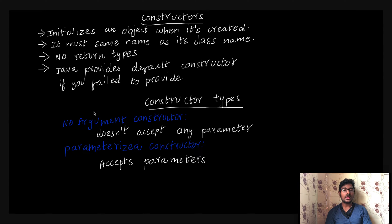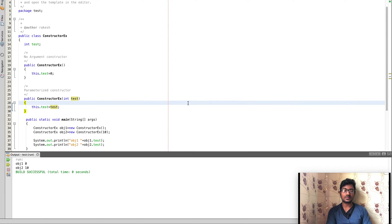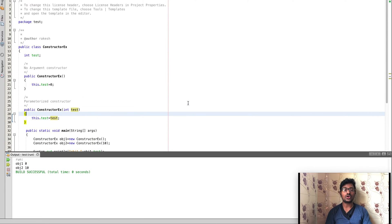Constructors are of two kinds: no-argument constructor and parameterized constructor. A no-argument constructor does not accept any parameter, whereas a parameterized constructor accepts parameters. This is the basic difference between a parameterized and a no-argument constructor.